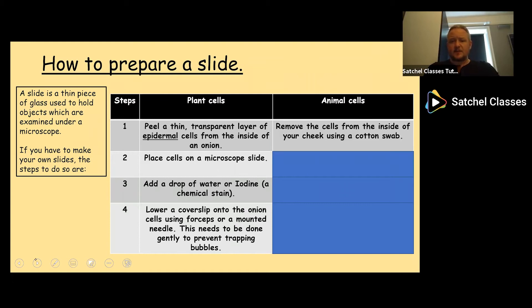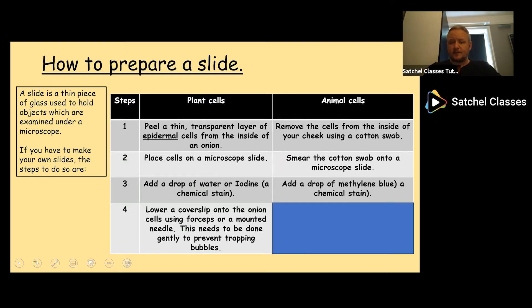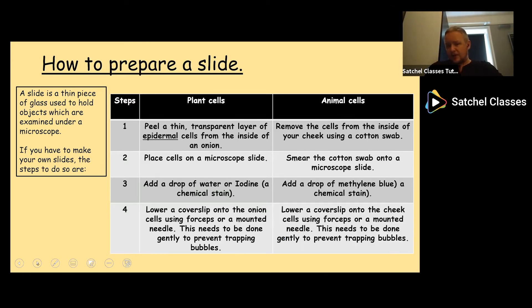If it's an animal cell slide you're preparing, you can remove cheek cells from the inside of your cheek using a cotton swab. Smear the cotton swab onto a microscope slide and then add a different stain. For animal cells, for cheek cells particularly, we use methylene blue, which is a chemical stain. Then we lower the cover slip again onto the cheek cells, the same way as before. Use forceps or a mounted needle and do it gently whilst ensuring you push any bubbles out through the side. To show you what I mean: you place one side of the cover slip down, lower the other side down, and as you're lowering it, make sure all the bubbles push towards the side where the mounted needle is.